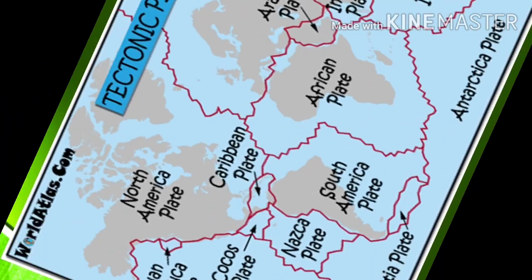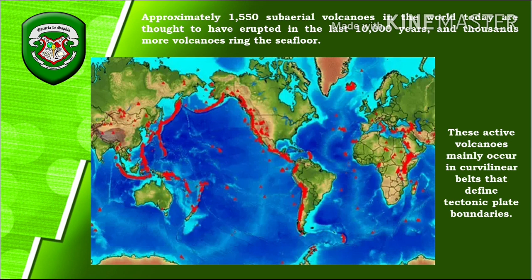Approximately 1,550 sub-aerial volcanoes in the world today are thought to have erupted in the last 10,000 years, and thousands more volcanoes line the seafloor. Technically, if a volcano erupted less than 10,000 years ago or had volcanic activity in the past 10 years, it can be classified as an active volcano. If a volcano has not erupted for more than 10,000 years, it is considered inactive. So there are approximately 1,550 active volcanoes across the globe.